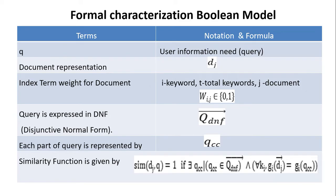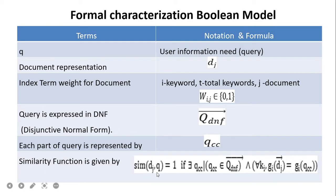When the user enters the query, it checks whether it is in DNF or CNF form. If it is in CNF, that is conjunctive normal form, it is converted to DNF. Internally, every query is converted into DNF format, represented by q_dnf. It is a vector because multiple terms are present in the query. Each part of the query is represented by qcc. The similarity function checks similarity between the document and query for each qcc.